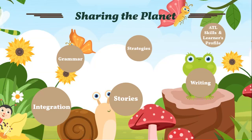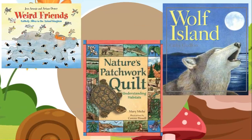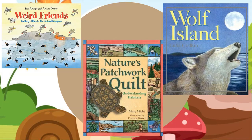Let us start with the stories. Here are the main stories we will be covering in this unit. Our first story is called 'Weird Friends,' which talks about how animals form weird friendships. The second story is called 'Wolf Island,' and our third story is 'Nature's Patchwork Quilt.' As you can see, all these stories talk about animals and how they adapt with their survival mechanisms.